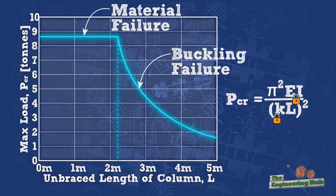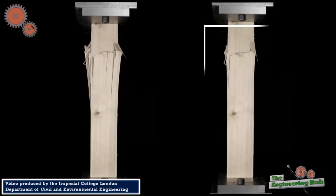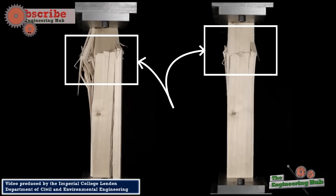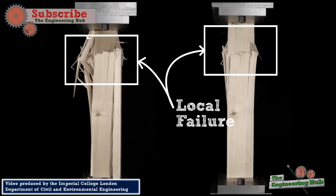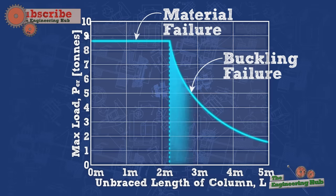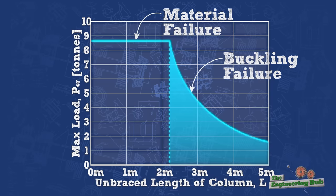Failure in the material takes the form of local bulging, crushing, or wrinkling of the wood grains. The right side of the curve corresponds to the global buckling of the entire member, in essence, a loss of stability.